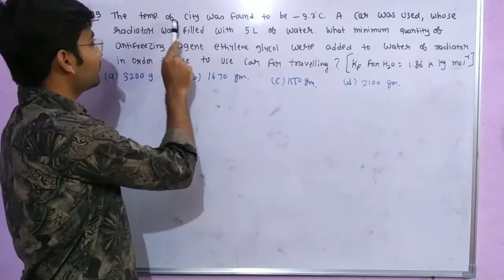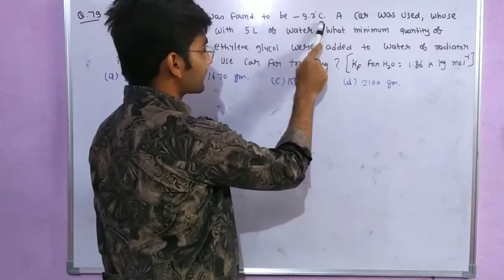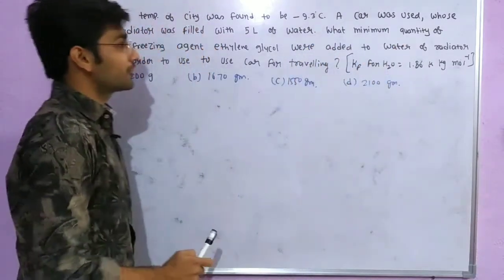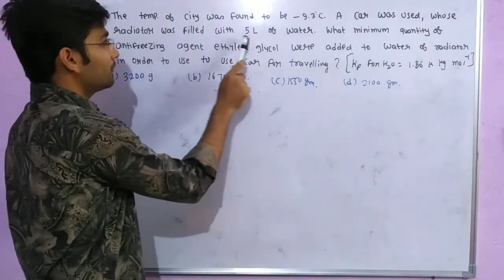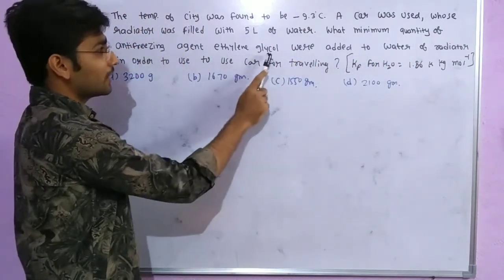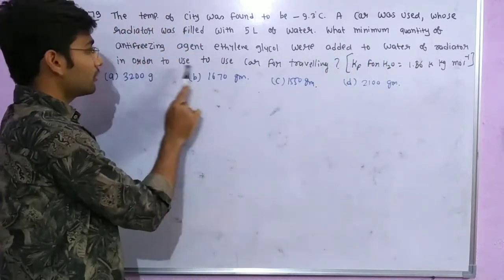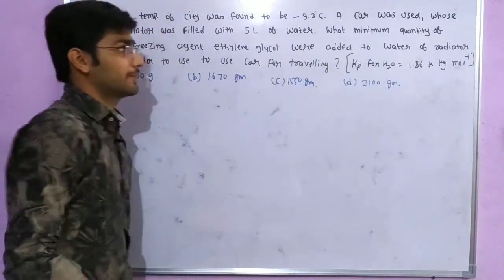Here is the question. The temperature of city was found to be minus 9.3 degrees Celsius. A car was used whose radiator was filled with 5 litre of water. What minimum quantity of antifreezing as ethylene glycol were added to water of radiator in order to use the car for travelling?